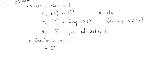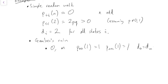For states 0 and m, once we get there we stay there — P_00(1) equals 1 and P_mm(1) equals 1. So that gives us the greatest common divisor of a bunch of things with a 1 in it, which means that d_0 equals d_m equals 1, and they are aperiodic. Remember, if something has period 1, we say it is aperiodic.